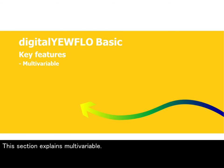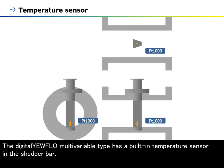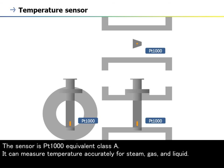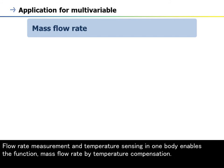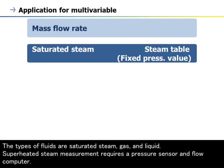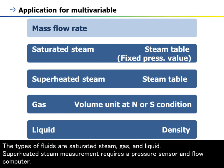This section explains multivariable. The Digital EarFlow multivariable type has a built-in temperature sensor in the shutter bar. The sensor is PT-1000 equivalent class A. It can measure temperature accurately for steam, gas, and liquid. Flow rate measurement and temperature sensing in one body enables the function of mass flow rate by temperature compensation. The types of fluids are saturated steam, gas, and liquid. Superheated steam measurement requires a pressure sensor and flow computer.